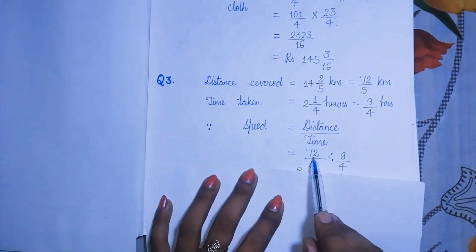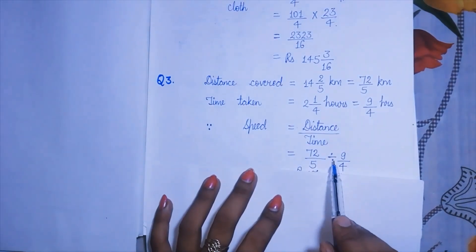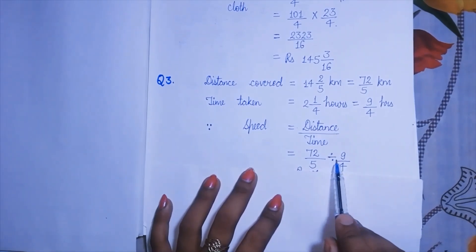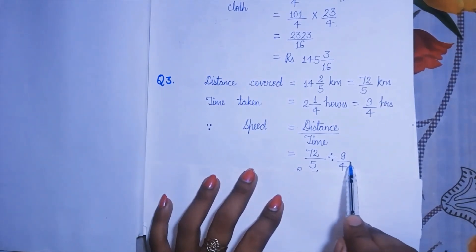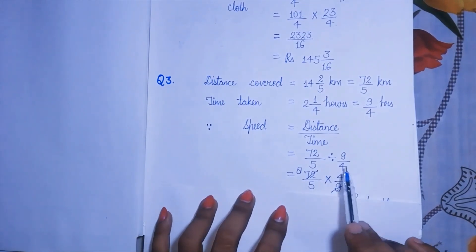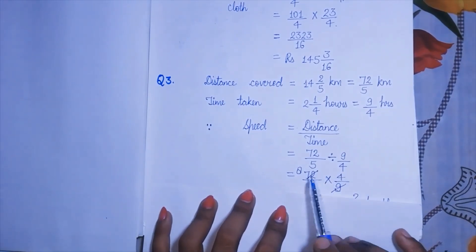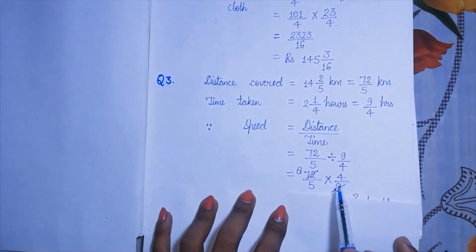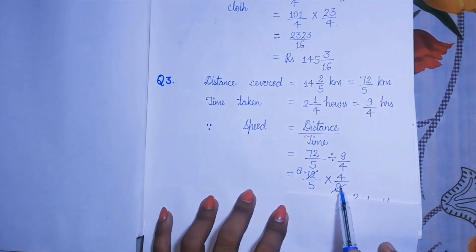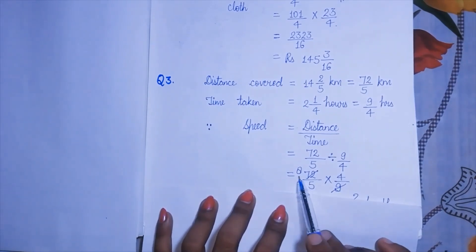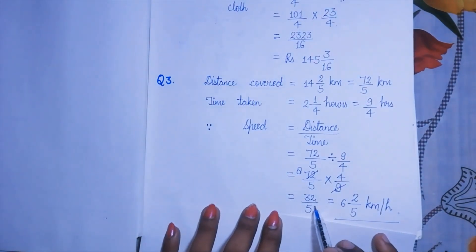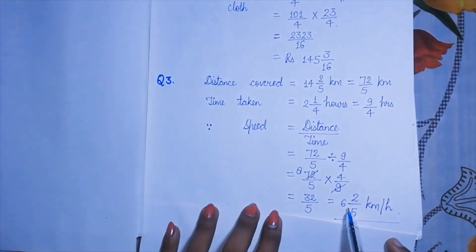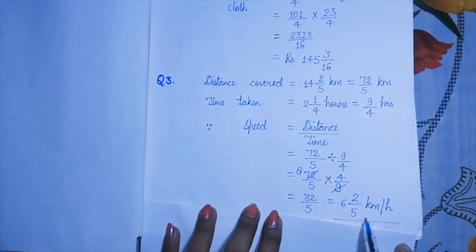Because one fraction divided by another fraction cannot be divided directly, we change the sign: we take the reciprocal of the last fraction. So we multiply 72 by 5 (numerator) and simplify. The 9 in the numerator simplifies with 72 to give 8, and then 8 fours are 32 by 5. Since this is an improper fraction, we simplify it to get 6 and 2/5 km per hour. That is the speed of the cyclist.